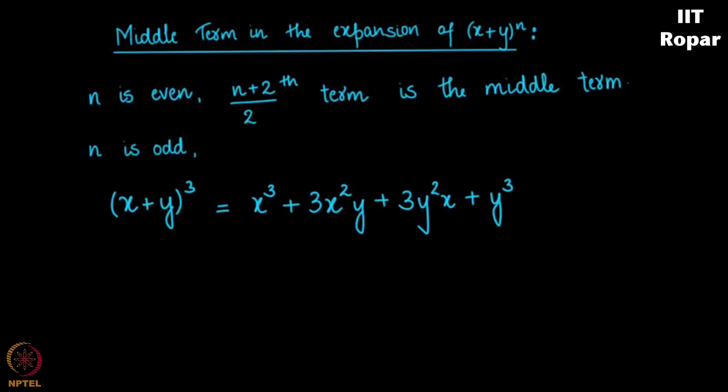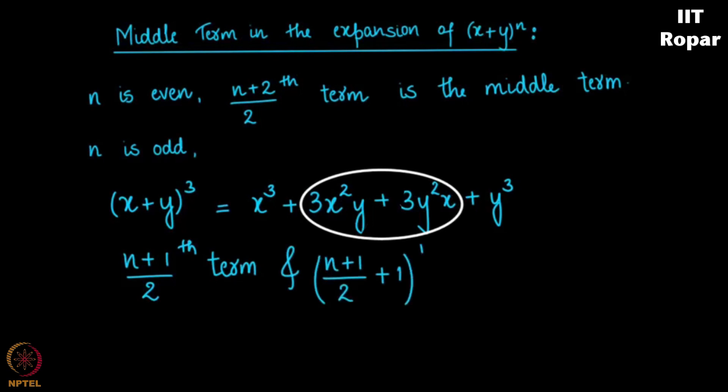You have two middle terms. You cannot decide this as a middle term or this as a middle term, so you consider both of them. Therefore, if n is odd we have n plus 1 by 2 th term and n plus 1 by 2 plus 1 th term. This term is also the middle term, and hence we have two middle terms if n is odd. I hope I am clear till now.